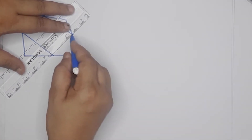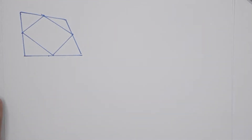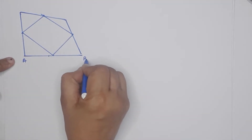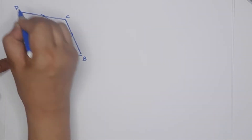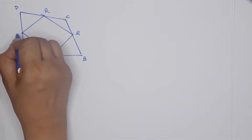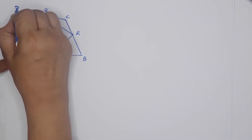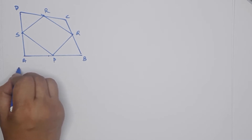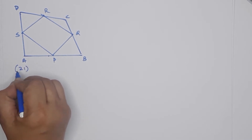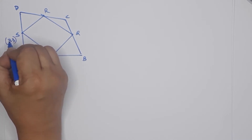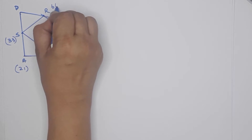Now we have to prove that we have a parallelogram. The vertices are labeled A, B, C, D for the large quadrilateral and P, Q, R, S for the smaller one. What is this point? The points are A and R.